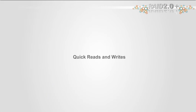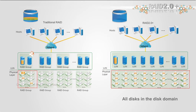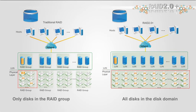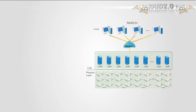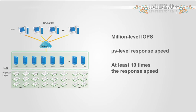Quick reads and writes. In the RAID 2.0 Plus environment, all disks in the disk domain — that is, over 100 disks — are involved in the data access process. This greatly improves the read and write speeds of the storage system. By contrast, in a traditional RAID environment, only disks in the RAID group, approximately a dozen disks, are involved in the data access process, making read and write speeds comparatively much slower. Huawei Enterprise Storage features million-level IOPS and microsecond-level response speed, at least 10 times faster than enterprise storage products using traditional RAID.